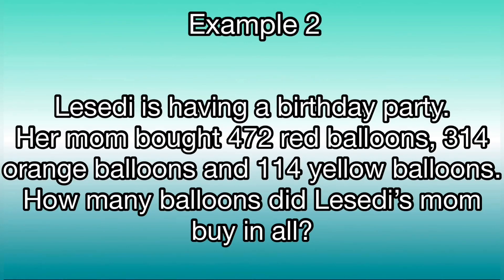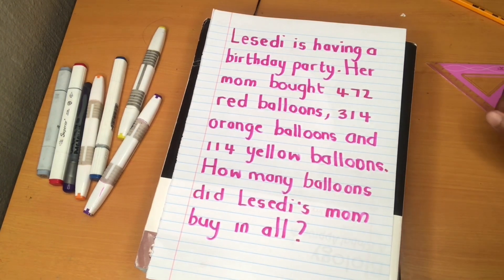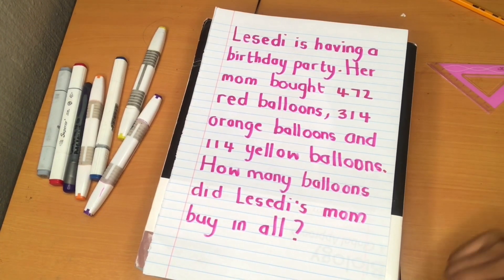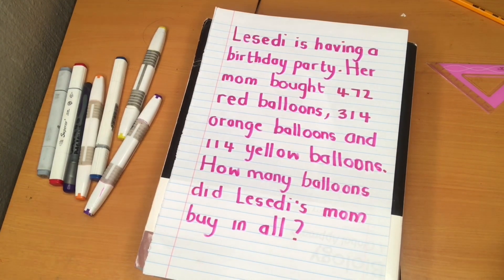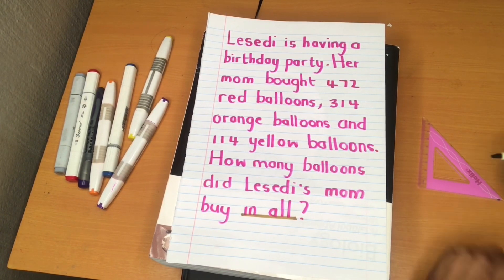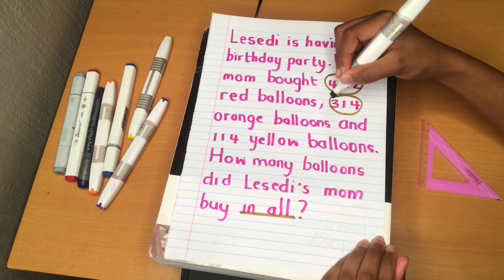Lacedi is having a birthday party. Her mom bought 472 red balloons, 314 orange balloons, and 114 yellow balloons. How many balloons did Lacedi's mom buy in all? Before we start, we need to find our special words. The special words 'in all' show us this is an addition word problem. There are three numbers to add: 472, 314, and 114.